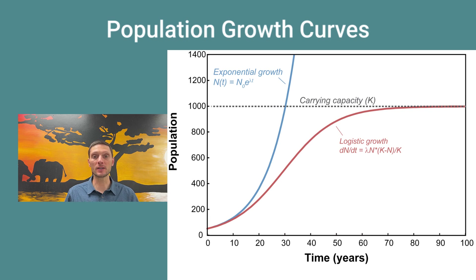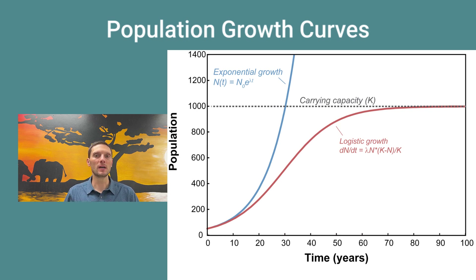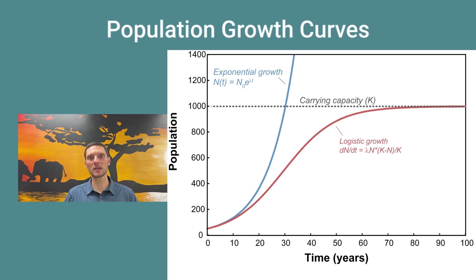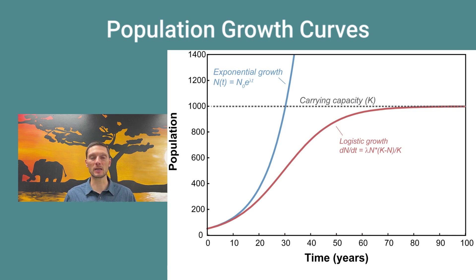There are two main ways populations increase in size. The first is exponential growth, which takes place during a period of ample resources. It's an example of a positive feedback loop — as more individuals are born, they produce more offspring in the next generation, compounding into a larger and larger population. When graphed over time, this produces a J-shaped curve. This is not sustainable and is only observed when a species spreads into a new area or takes over a previously unoccupied ecological niche.